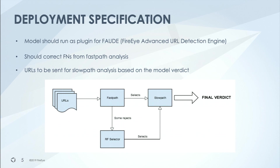Here's what we wanted to do. We wanted a model that could sit as a plugin on FOD, which is the FireEye Advanced URL Detection Engine. It is the URL detection and analysis component of our email security product and it's also responsible for 60% of the detections that come from our email product. To provide some context on the way FOD was initially set up, I'll move to the next slide.